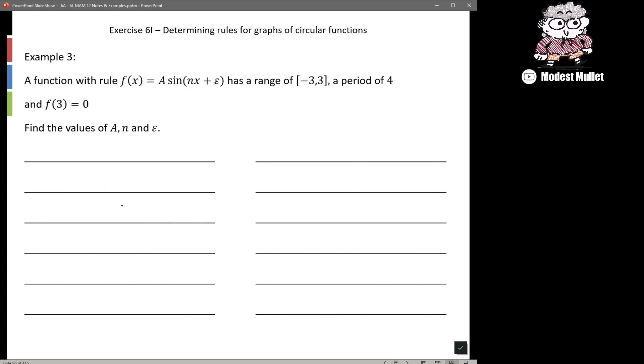Last example, nice and quick. A function with the rule f(x) = a sin(nx + ε) has a range of negative 3 to 3 and a period of 4. And f(3) = 0, find the values of a, n and ε.